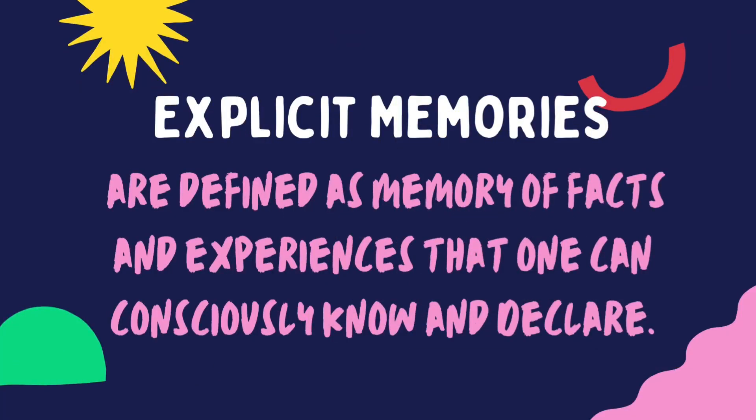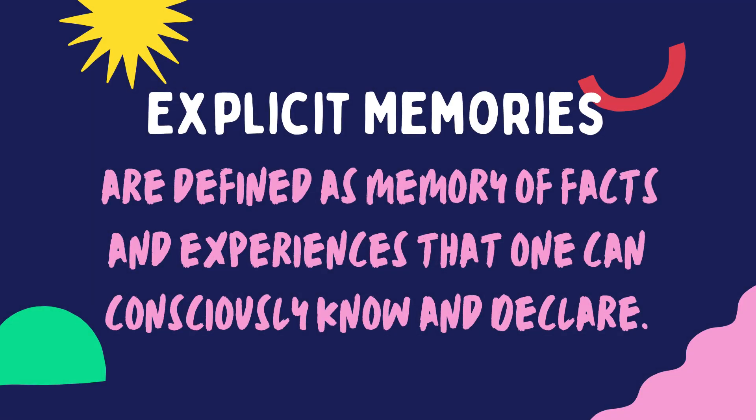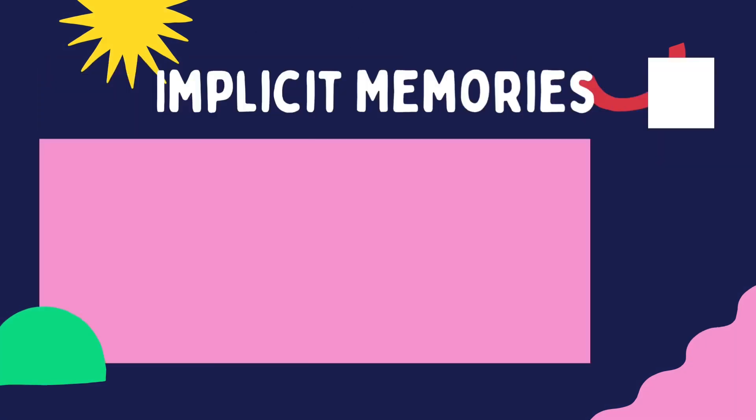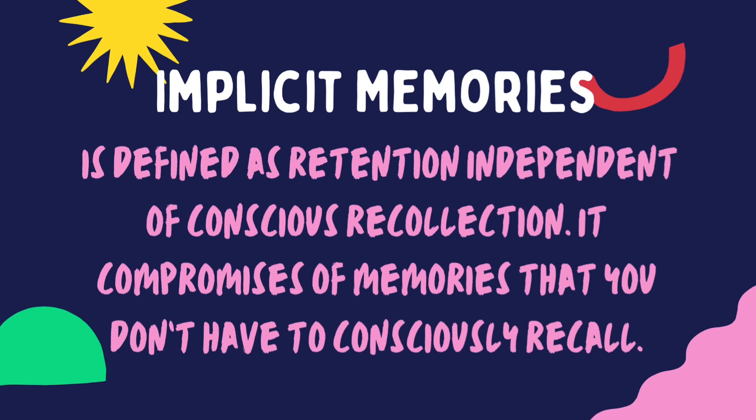Long-term memory is divided into two classifications: explicit and implicit memories. Explicit memories are defined as memory of facts and experiences that one can consciously know and declare. Implicit memory, however, is defined as retention independent of conscious recollection — it comprises memories that you don't have to consciously recall. For example, explicit memories include remembering the name of your teacher or the country you live in, while implicit memories include things like how you brush your teeth, how you hold a fork, or how to breathe.